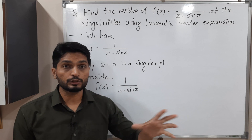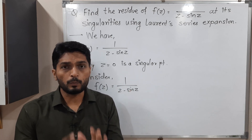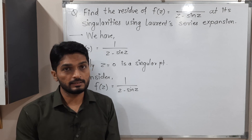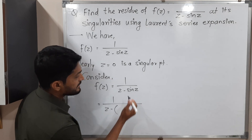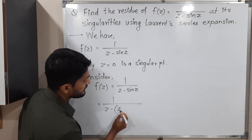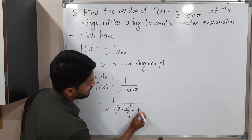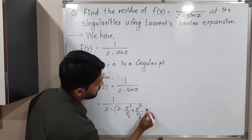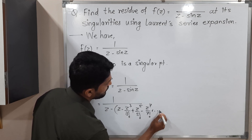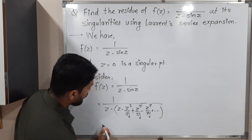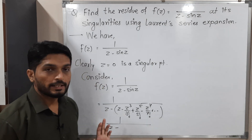When finding the Laurent series expansion, we look for a standard function we can use. We have sin z, which is a standard function with a known series. The series for sin z is: z − z³/3! + z⁵/5! − z⁷/7! + and so on. We substitute this inside the bracket z − sin z.